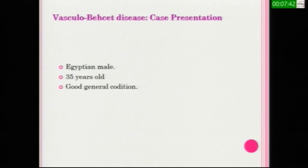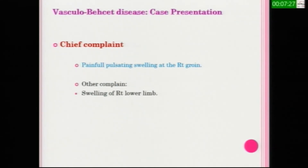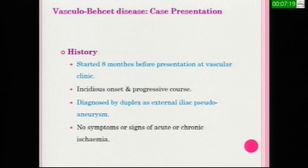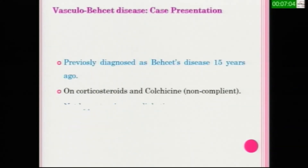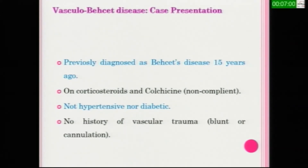According to our organization's experience, we have six patients and will present their cases in our review article about vascular Behçet's disease. One of these cases is an Egyptian male patient, 35 years old, with a good general condition. His chief complaint is painful, pulsating swelling at the right groin and swelling at the right lower limb. His condition started eight months before presentation with insidious onset and progressive course. He was diagnosed by duplex ultrasound as external iliac pseudoaneurysm with no signs of acute or chronic ischemia. He was previously diagnosed by his rheumatologist as Behçet's disease 15 years ago, on glucocorticoids and colchicine, but was not compliant. He was not hypertensive nor diabetic, with no history of vascular trauma or family history of Behçet's disease.